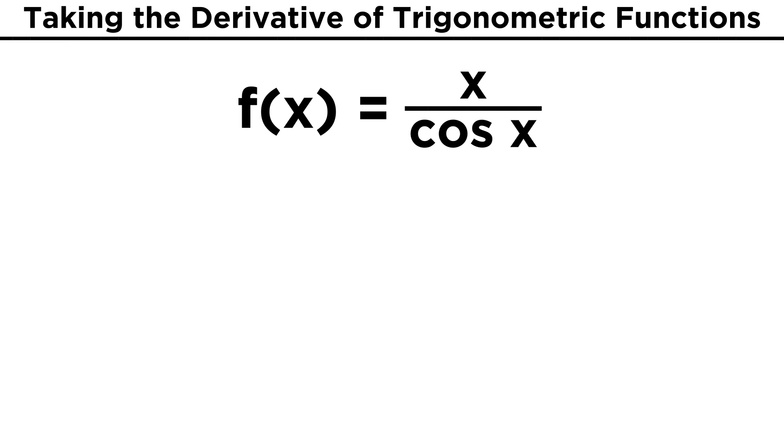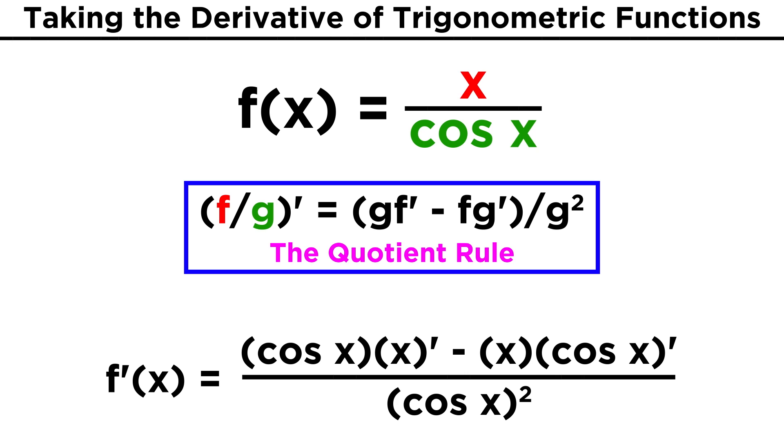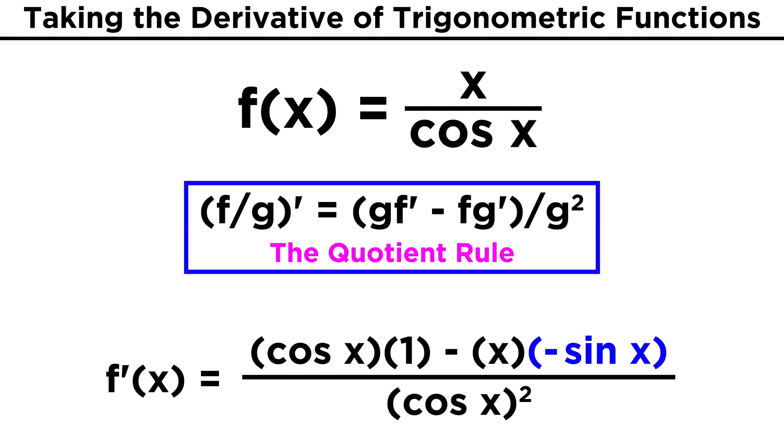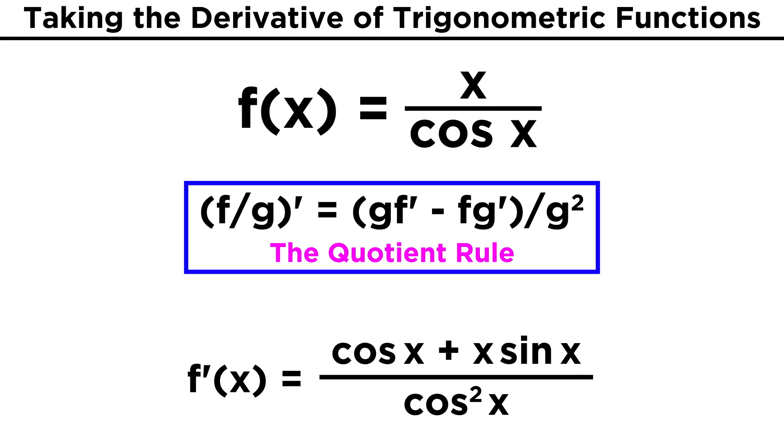Let's try one more. How about x over cosine x? Now we need to use the quotient rule. Cosine x times the derivative of x, minus x times the derivative of cosine x, over cosine x squared. Let's evaluate the derivatives, which for x will be one, and for cosine x will be negative sine x. That gives us cosine x plus x sine x on the top, and that's all we can do.